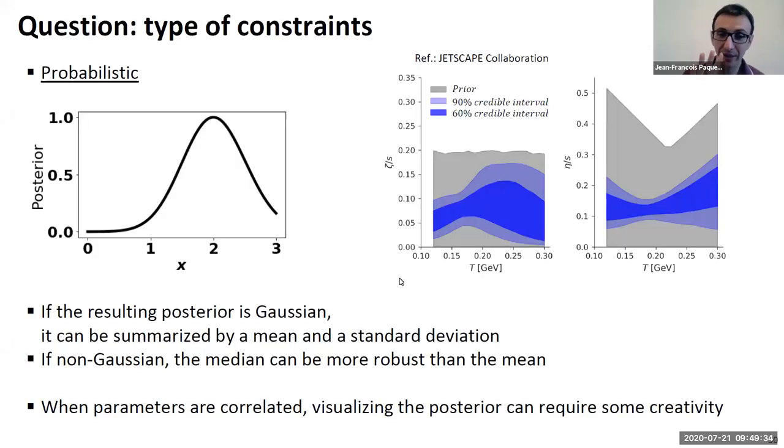The posterior is ultimately your output. So what you obtain from Bayesian parameter estimation is a probabilistic constraint.